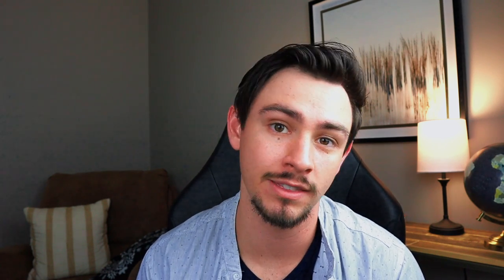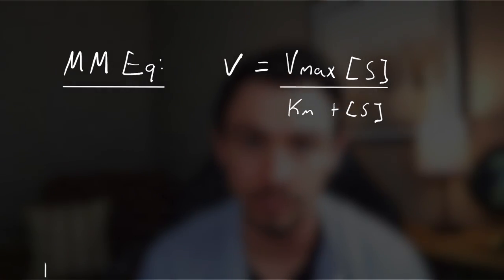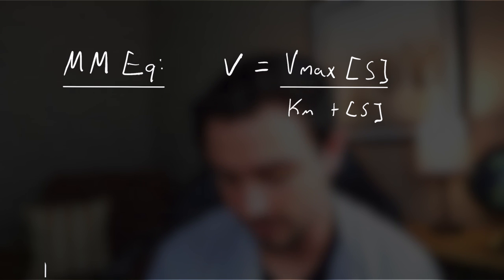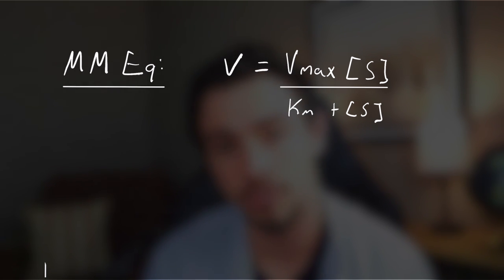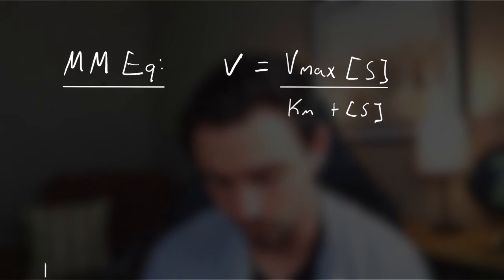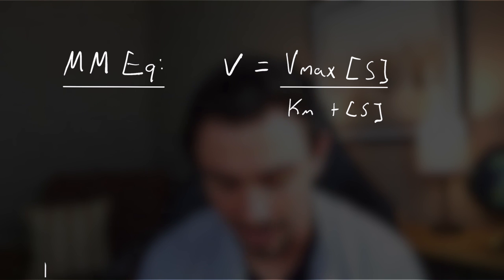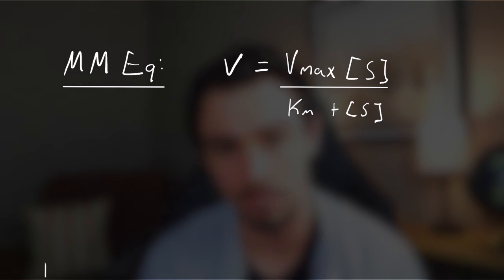The equation that describes this conversion is called the Michaelis-Menten equation. The velocity of your enzyme's conversion is equal to the maximum velocity times the substrate concentration, divided by Km plus the substrate concentration.